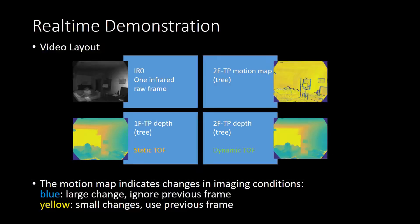Pixels shown in blue are assumed to have a large change in imaging conditions, and therefore information from previous frames is ignored. Pixels shown in yellow are small change pixels, and all the information is used from previous frames.